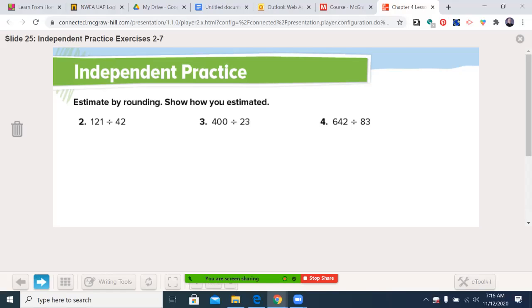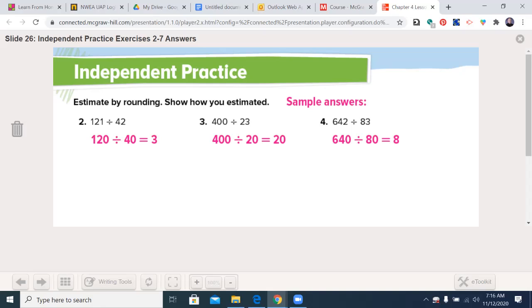Welcome back. Let's bring up the answers. First one, four goes into 12 pretty easily. So that works really nice. 120 divided by 40 was three. We had 400 divided by 20, which is 20. And 640 divided by 80. Those are sample answers because you may have chosen on a problem like this to go 600 and 100 and get six.